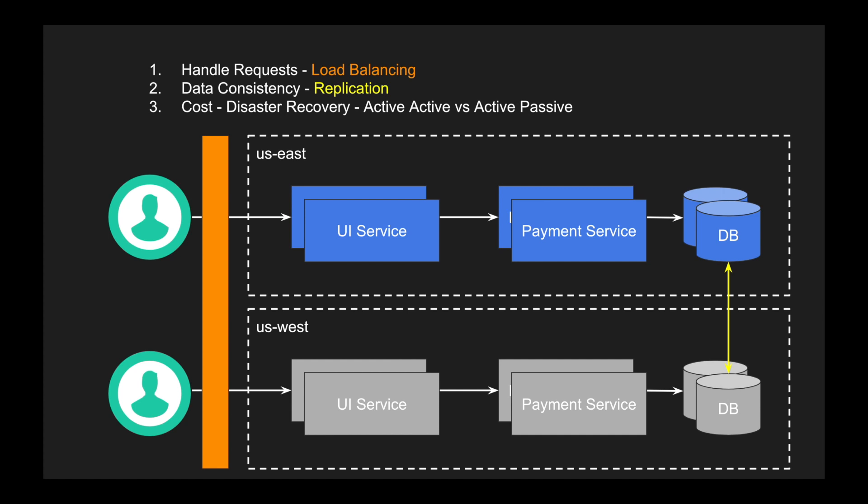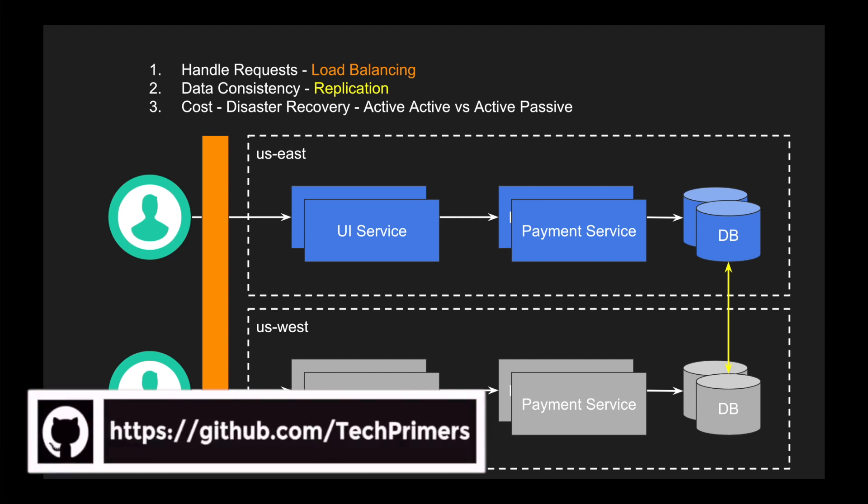High availability is not something new that we discovered with microservices — it is a general concept used across any application, whether microservice or monolith. If you understand why we do high availability and how to mitigate the challenges in designing highly available architectures, you can create more robust distributed systems be it monoliths or microservices. I hope you understood how to create highly available architectural design patterns and how we can address the challenges which these architectures pose.